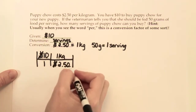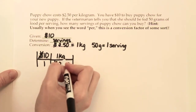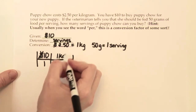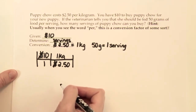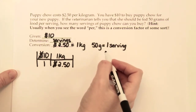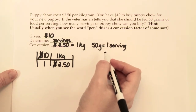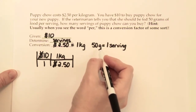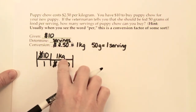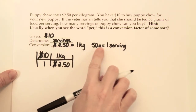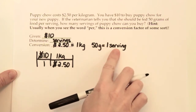If we stopped right now, we would know how many kilograms of food we could buy with our $10, but we're not done yet — it wants servings of food we could buy. So we have to get our kilograms into servings somehow. We don't have a conversion factor that goes directly from kilograms to servings, but we do have one that gives us grams to servings, so if we could get kilograms into grams, we could use that grams-to-servings link.